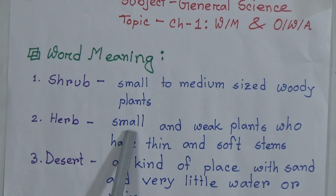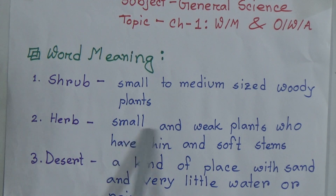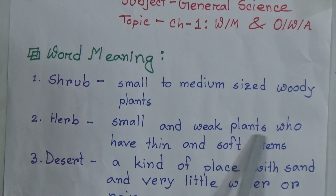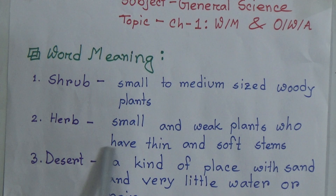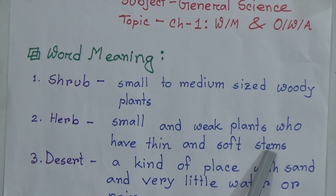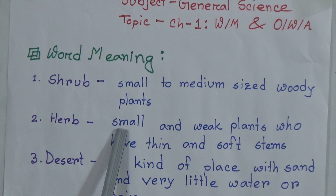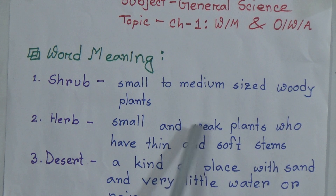Next word meaning: herb. The meaning of herb is small and weak plants that have thin and soft stems.